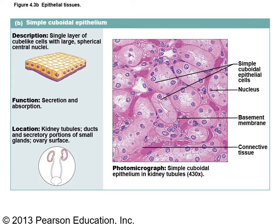Simple cuboidal epithelium is a single layer of cube-like cells with large spherical central nuclei. Where to remember this is in the kidney tubules — you can see them cut cross-sectionally with the nuclei and lumen visible. This tissue is involved with secretion and absorption; the kidneys filter about 180 liters of fluid derived from plasma every single day, and most of what's filtered gets reabsorbed back into the blood.